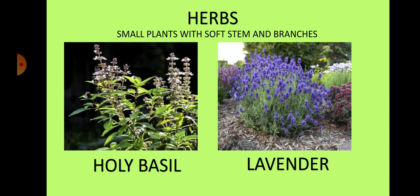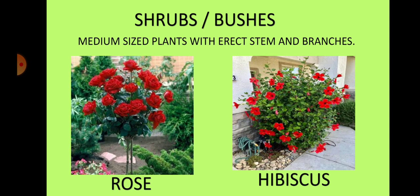This is the picture of holy basil and lavender — they are herbs. Small plants with soft stem and branches are called herbs. Holy basil and lavender are flowering herbs. Shrubs are medium-sized plants with erect stem and branches. Rose and hibiscus are shrubs and examples of flowering shrubs.